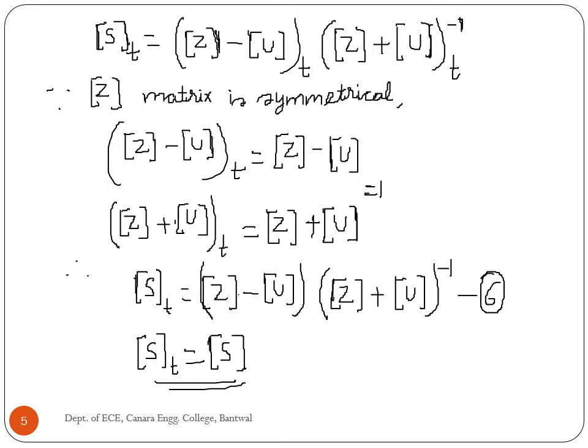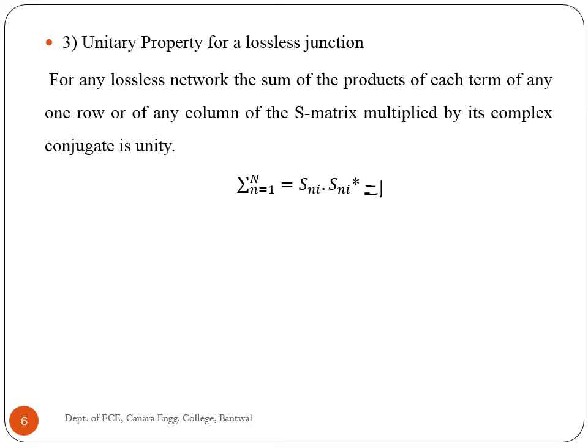The third property is the unitary property for a lossless junction. For any lossless network, the sum of the products of each term of any one row or column of the S matrix multiplied by its complex conjugate is unity. For a lossless network, the total power leaving the ports must equal the total power input to those ports.